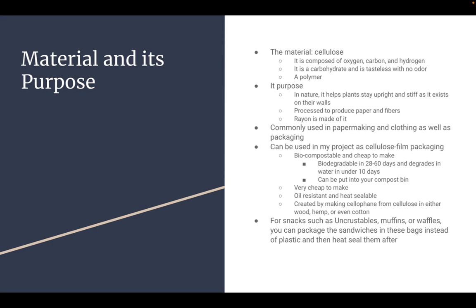It is very cheap to make and oil-resistant and heat-sealable. Since it is oil-resistant, it would be very good because you could put oily foods such as muffins or pancakes in it, and it would still be okay. It is created by making cellophane from cellulose in either wood, hemp, or even cotton.